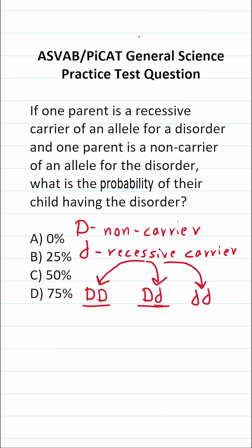When you have the genotype little d, little d, this person has the disorder and they carry the recessive allele for the disorder. When a genotype is expressed — in this case, expressed as this disorder — it's called a phenotype.